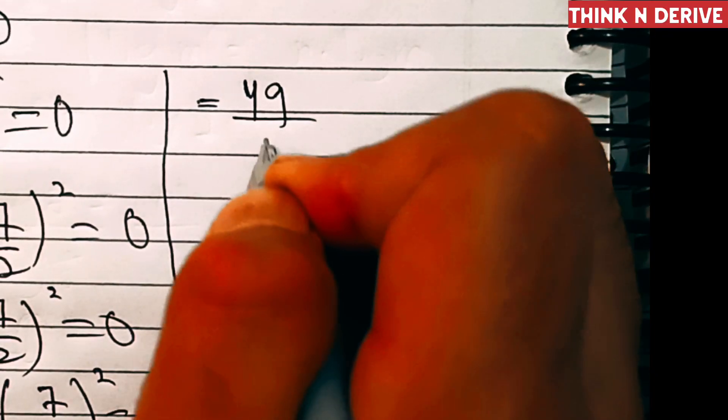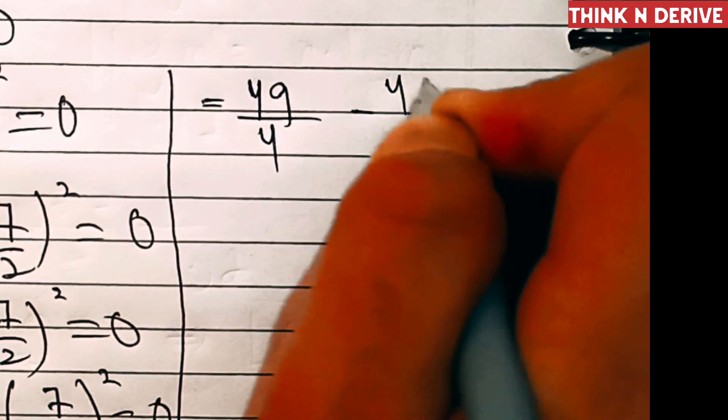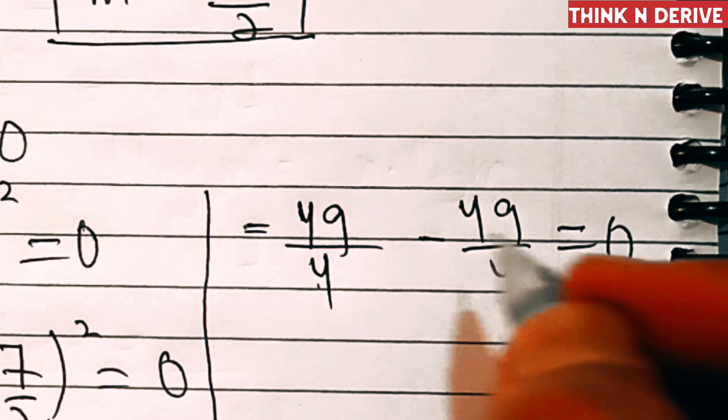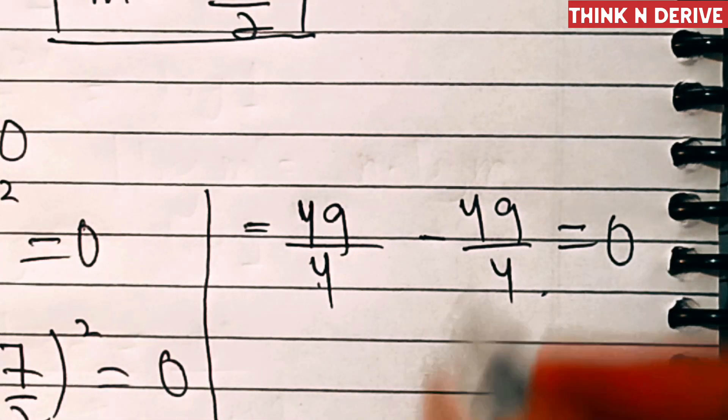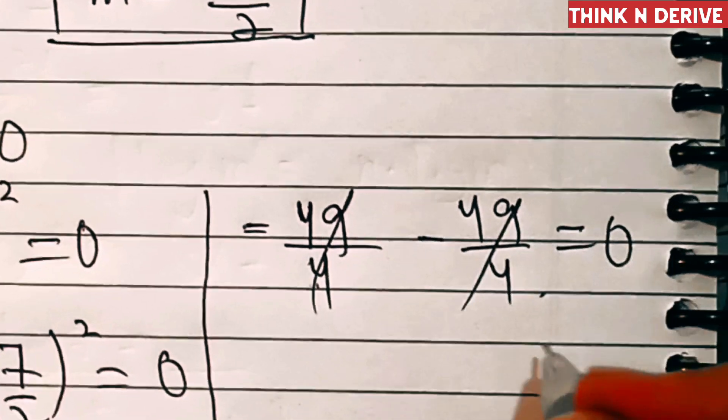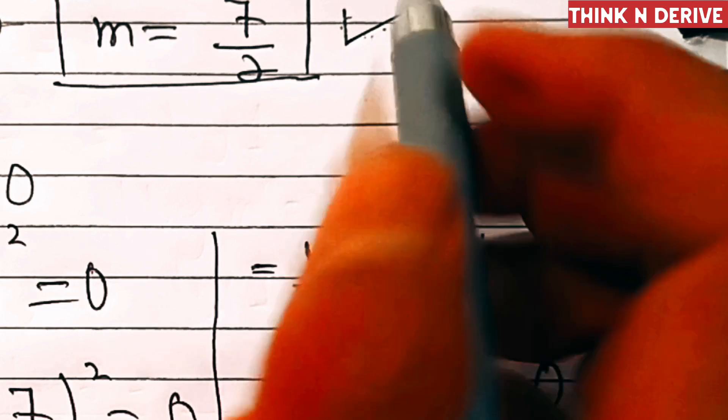49 divided by 4 minus 49 divided by 4 equals zero. These are the same terms with different signs, so 49 by 4 minus 49 by 4 equals zero. So our value of m equals 7 by 2 is correct.